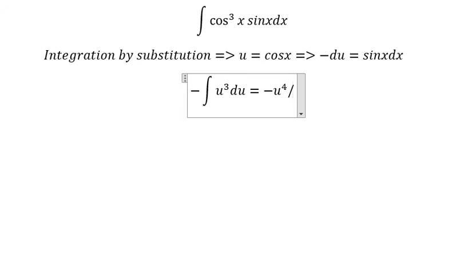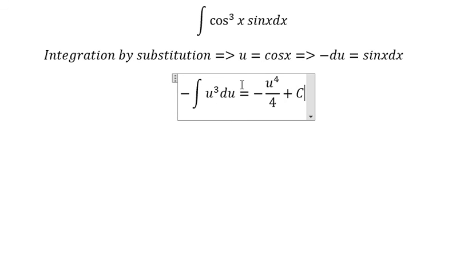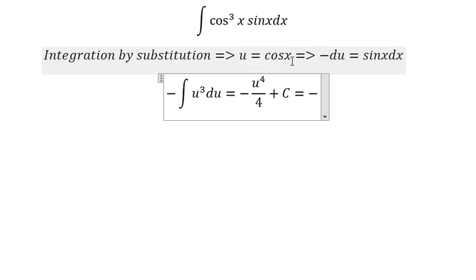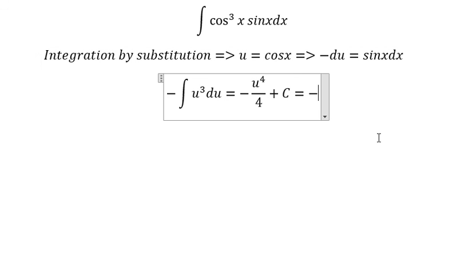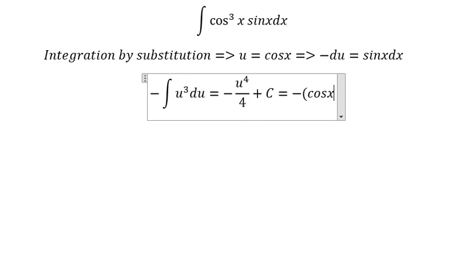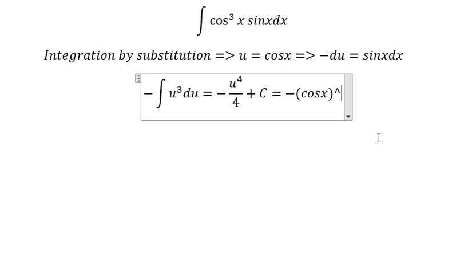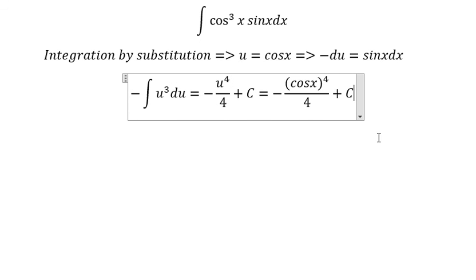In here we need to convert u back to the x, so we have this one and we get about cosine x to the power of 4 over 4 plus c. And this is the final answer. That's the end, thank you for watching.